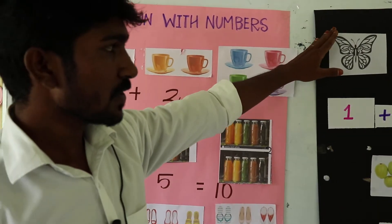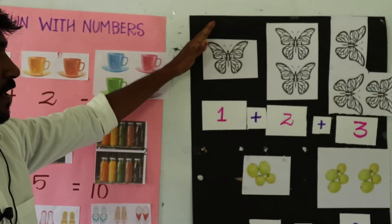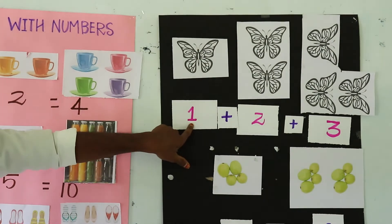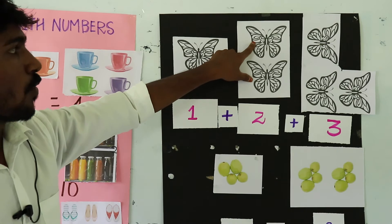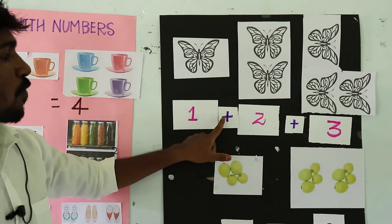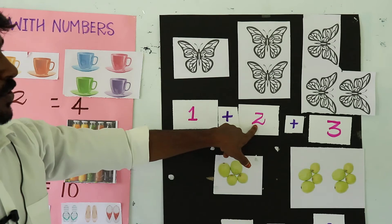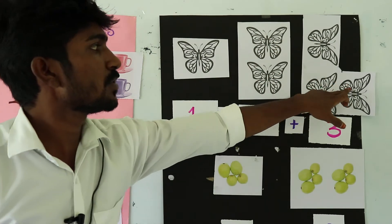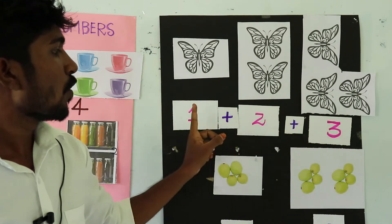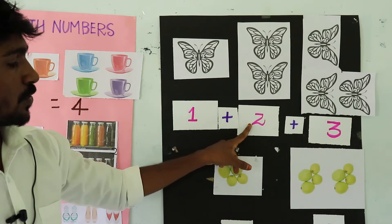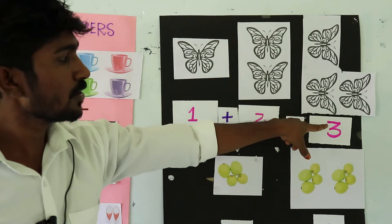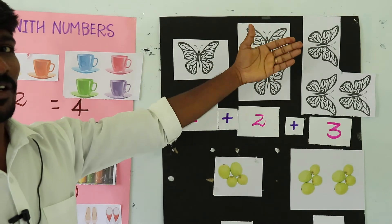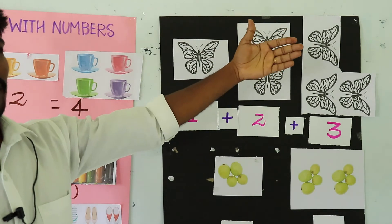Next one, look at the chart paper. The first one, the butterflies. So how many butterflies are there? Only 1. Next one also, 1, 2. So 1 plus 1 is equal to 2. The last one, how many butterflies are there? 1, 2, 3. So 2 plus 1 is equal to 3. 1 plus 1 is equal to 2, 2 plus 1 is equal to 3, suppose 3 plus 1 is equal to 4, 4 plus 1 is equal to 5, 5 plus 1 is equal to 6, and so on.